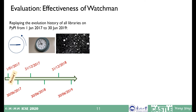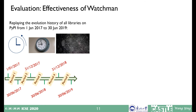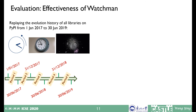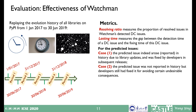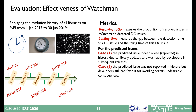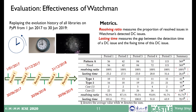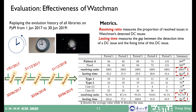To evaluate the effectiveness of Watchman, we played back the evolution history of all the libraries on PyPI over the past five years, using resolving rate, recall, and lasting time as metrics. For the predicted issues, we also checked why they had turned into real ones. Our results strongly demonstrate that Watchman can precisely detect and predict dependency conflict issues.